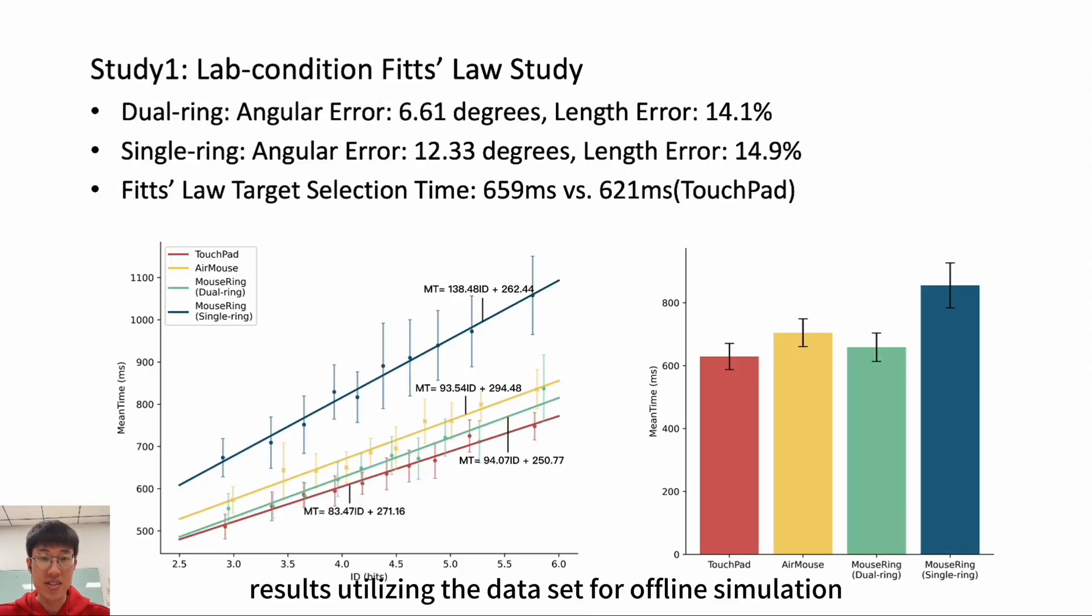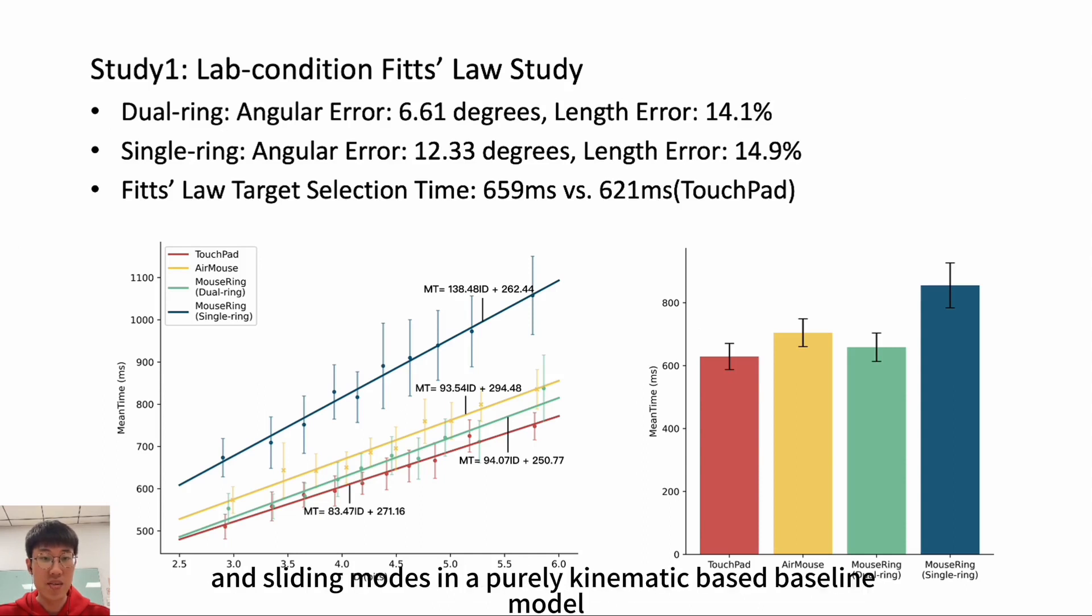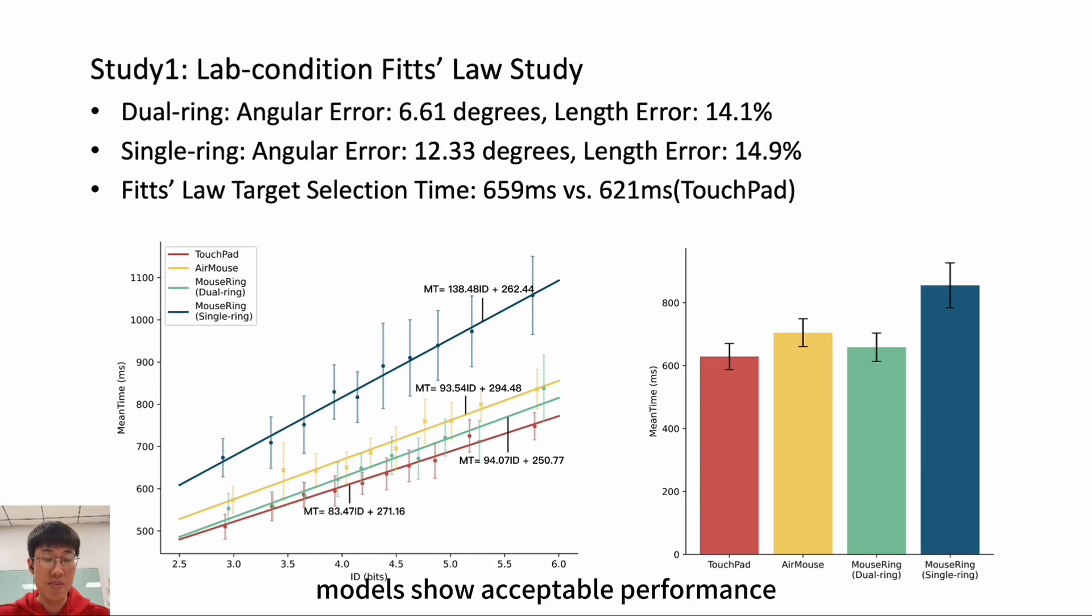Utilizing the dataset for offline simulation, we conducted a comparative analysis of different model configurations, ring numbers, and sliding modes. In a purely kinematic-based baseline model, the tracking error is significant. End-to-end models show acceptable performance. By incorporating physical constraints, the results become more stable and accurate. The dual MouseRing demonstrates precise selection of small targets, showcasing a mean angular error of 6.6 degrees, while the single MouseRing exhibits a mean angular error of 12.3 degrees with its lighter setup.